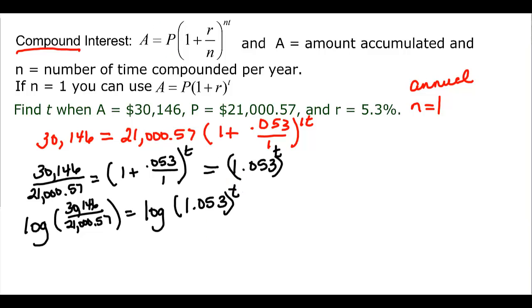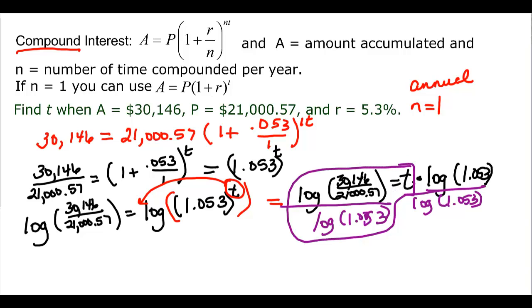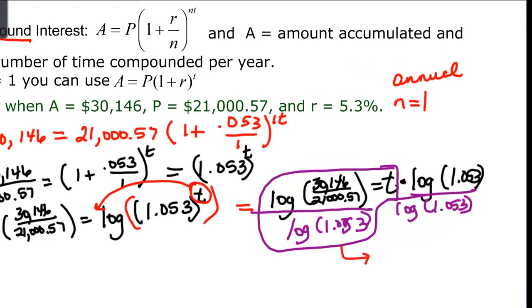Now we have that property that says I have a log with an exponent in my argument. So it can come out front and we have the log of that fraction divided by the 21,057 equal to t times the log of my 1.053. To finish the problem off, I just have to divide both sides by the log of 1.053. I really need to take this to my calculator and get a time that makes more sense.